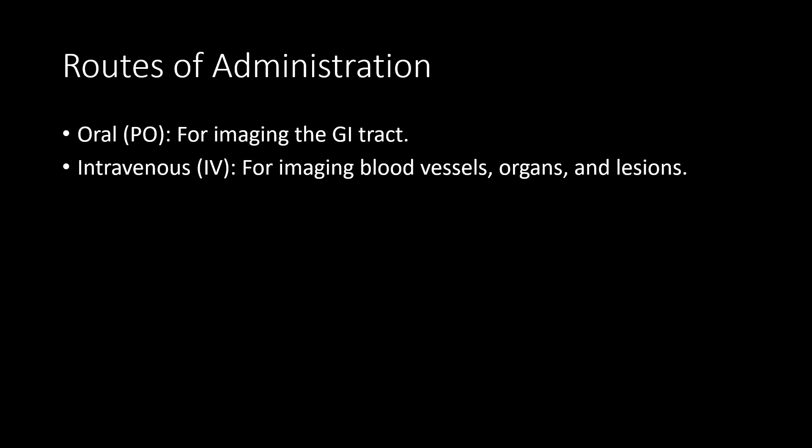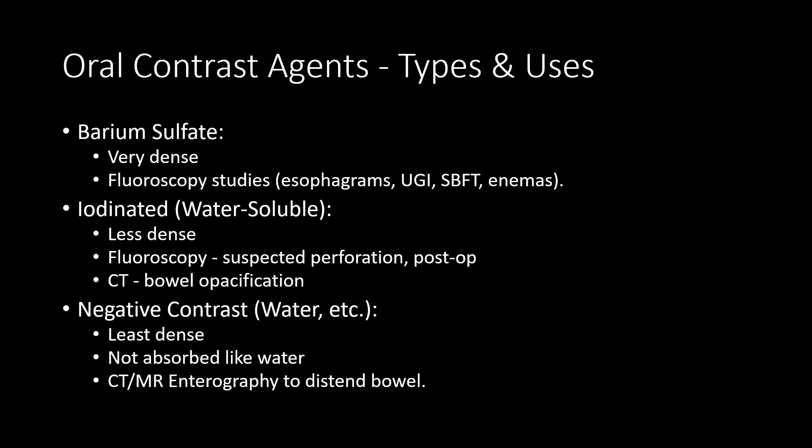There are multiple different routes of administration of contrast, but the two primary routes are oral administration or intravenous administration. Oral administration is very important for imaging of the GI tract. When thinking about oral contrast agents, there are two main types: barium contrast and iodinated or water-soluble contrast. Barium contrast is very dense; we primarily use it in fluoroscopy for things like modified barium swallows, esophagrams, upper GI studies, and small bowel follow-throughs — your routine fluoroscopic studies.